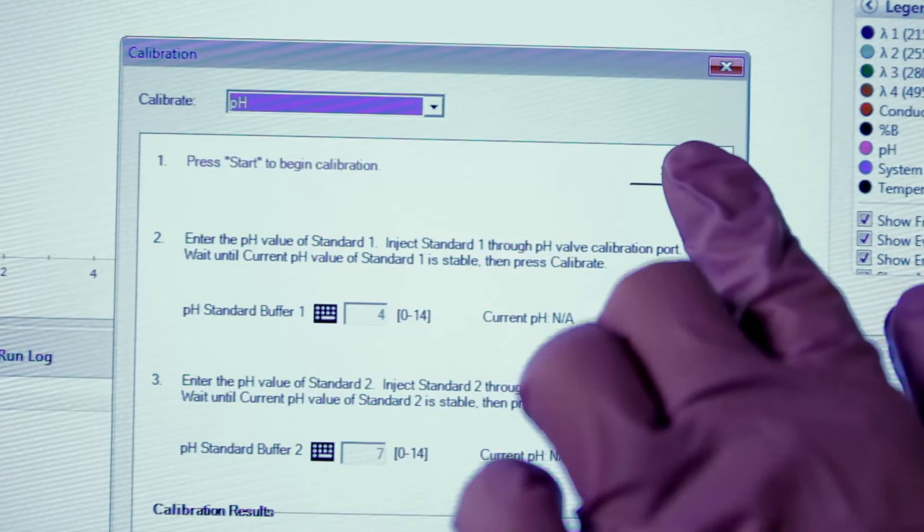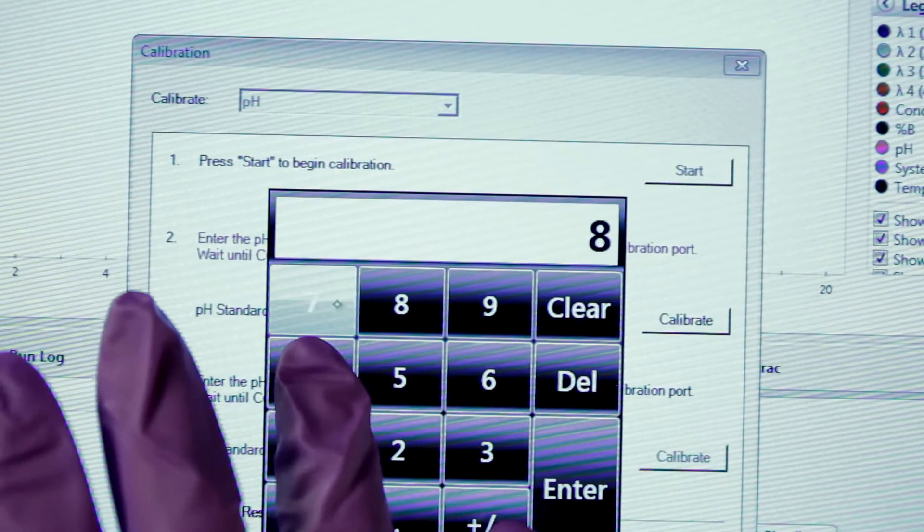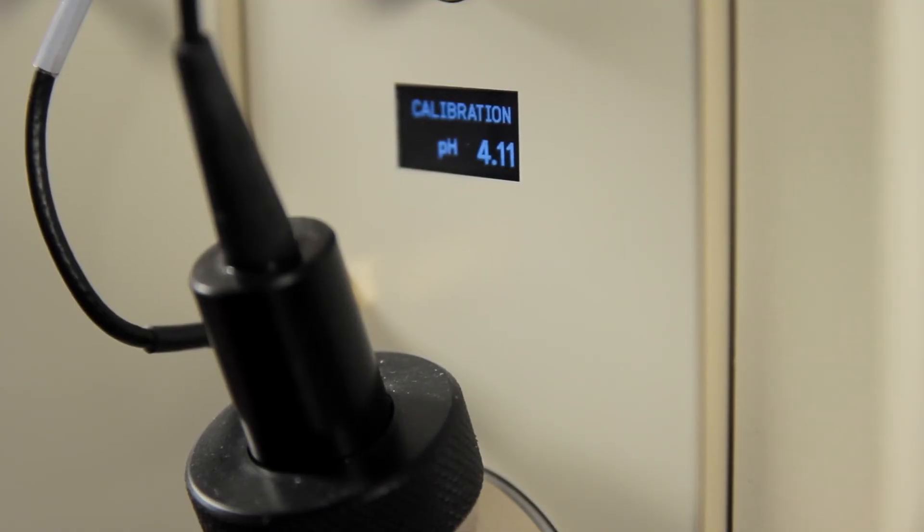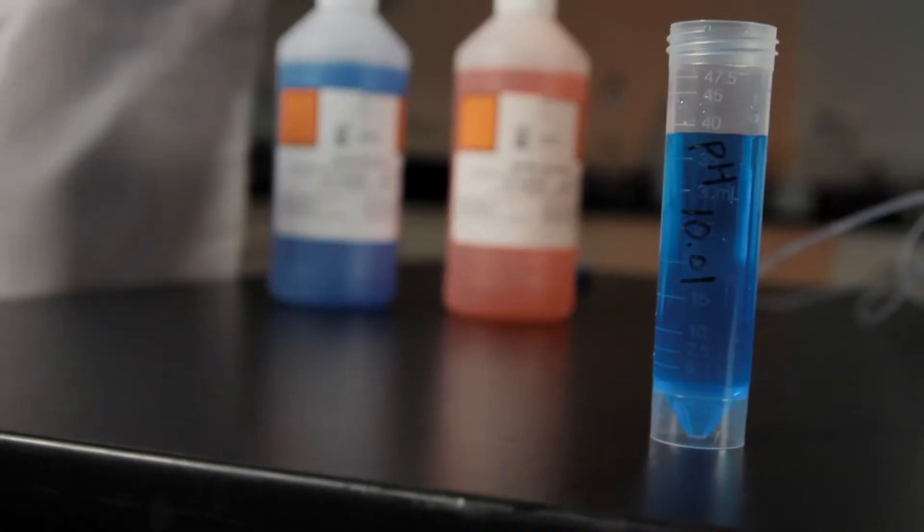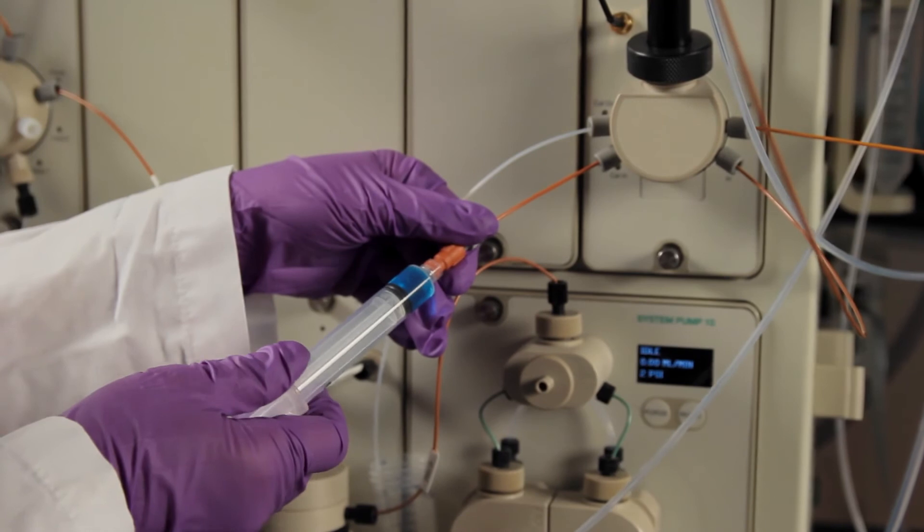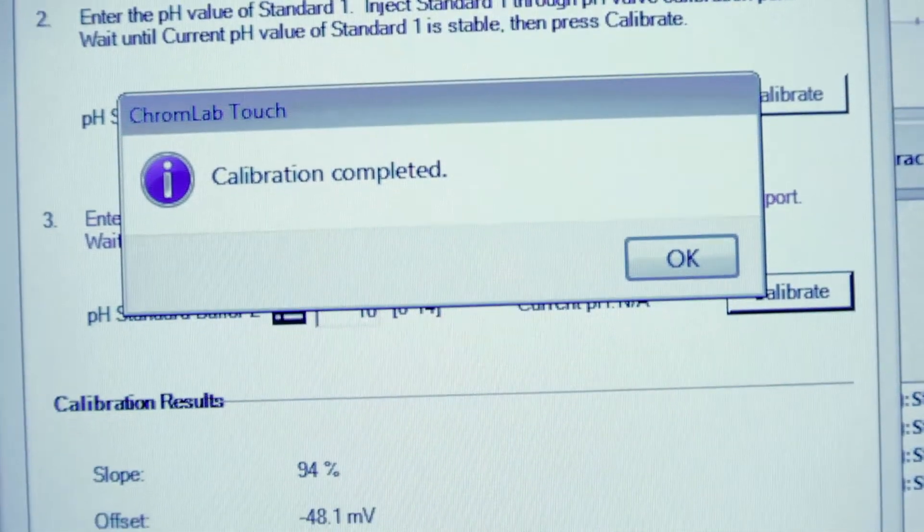Press Start and enter the pH value of your first standard buffer. Once the current pH value is stable, press Calibrate. When finished, repeat these steps with the second pH calibration solution.